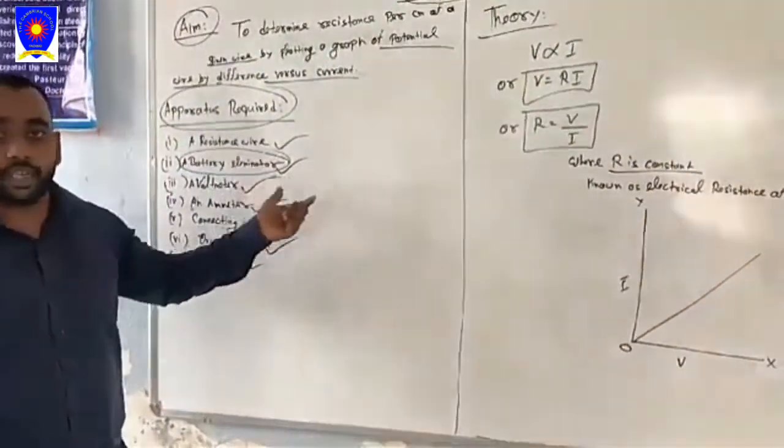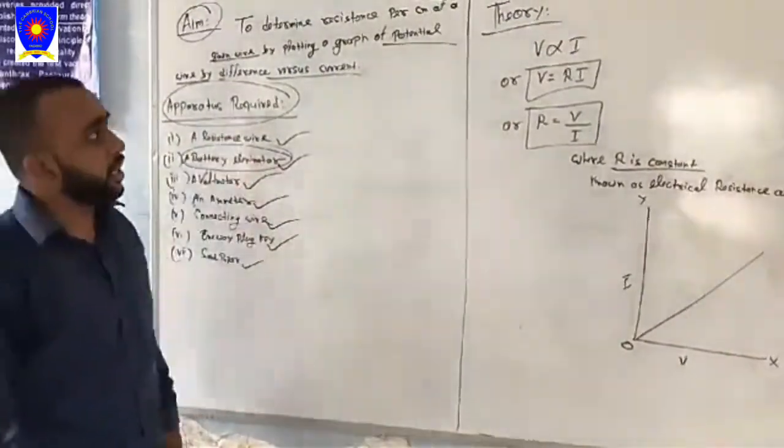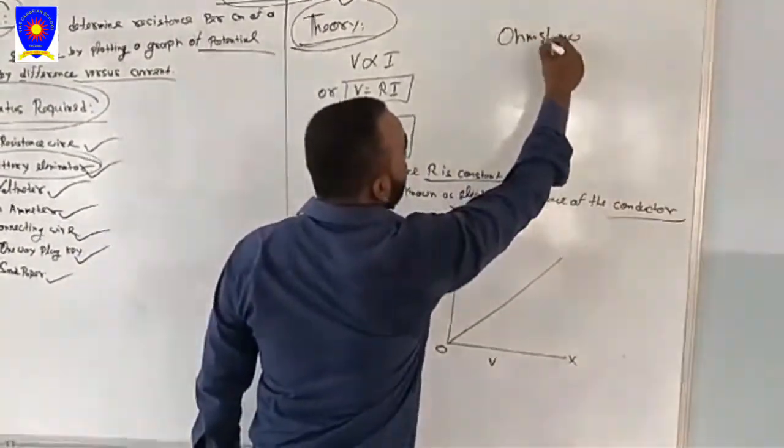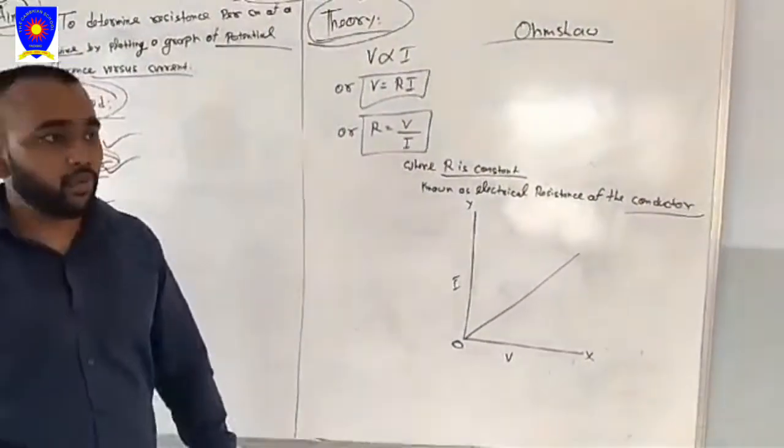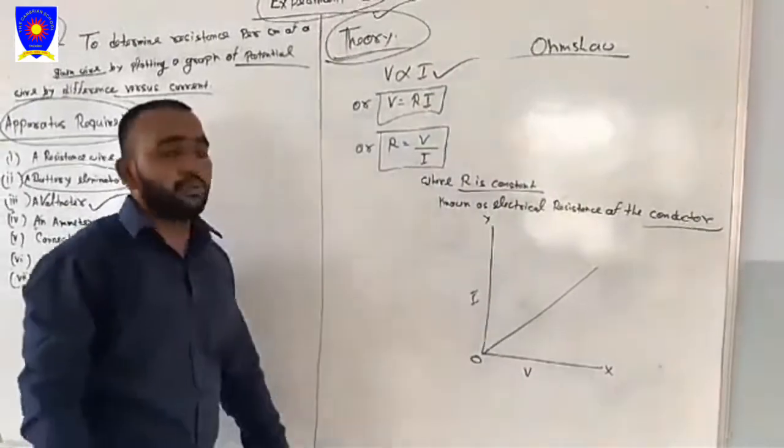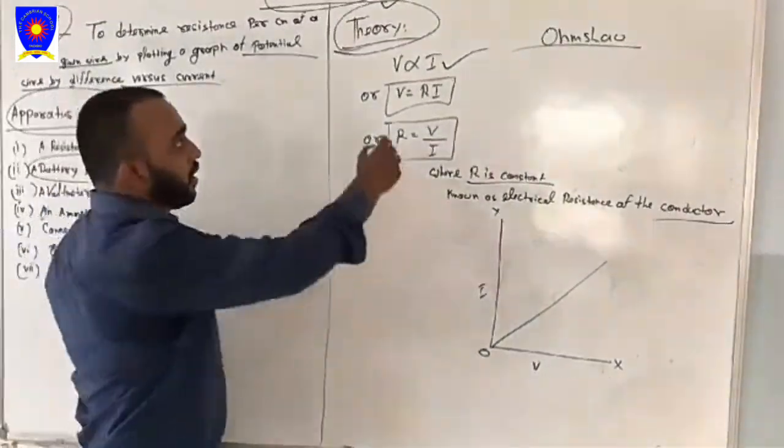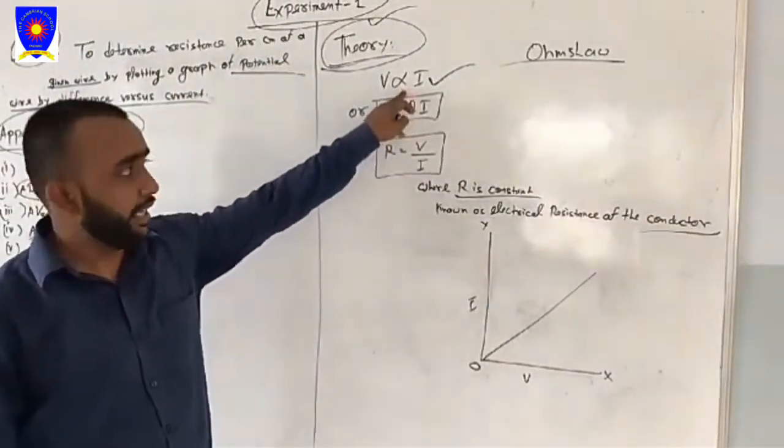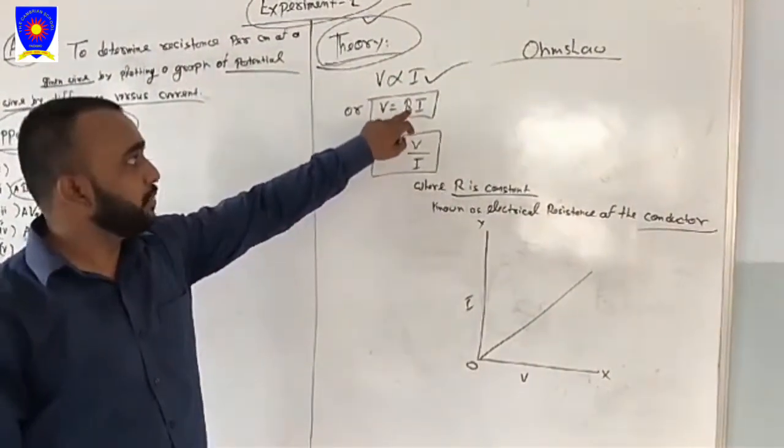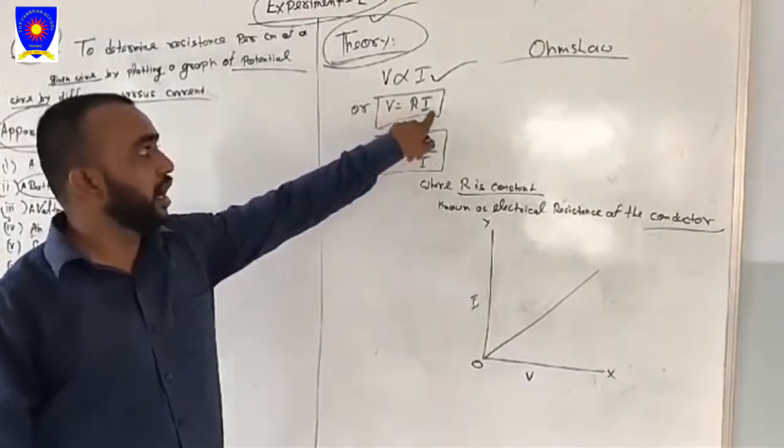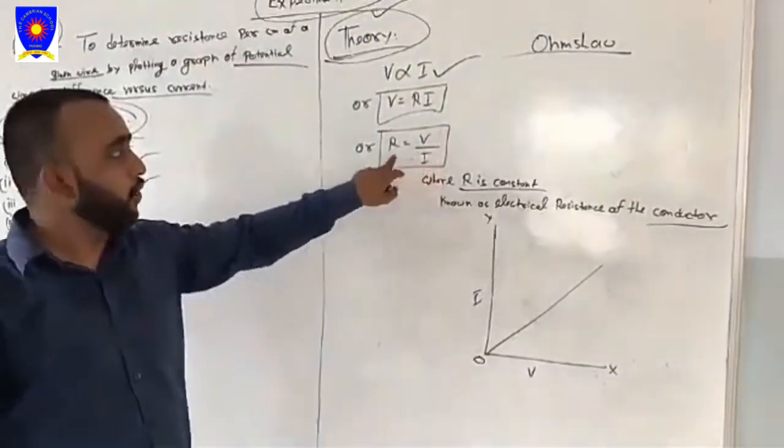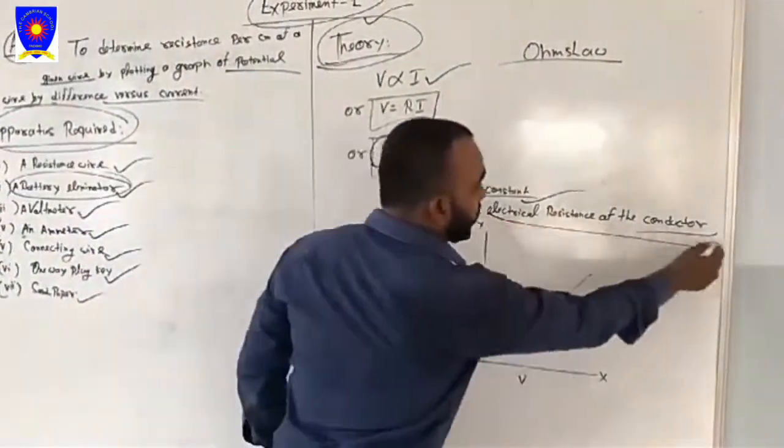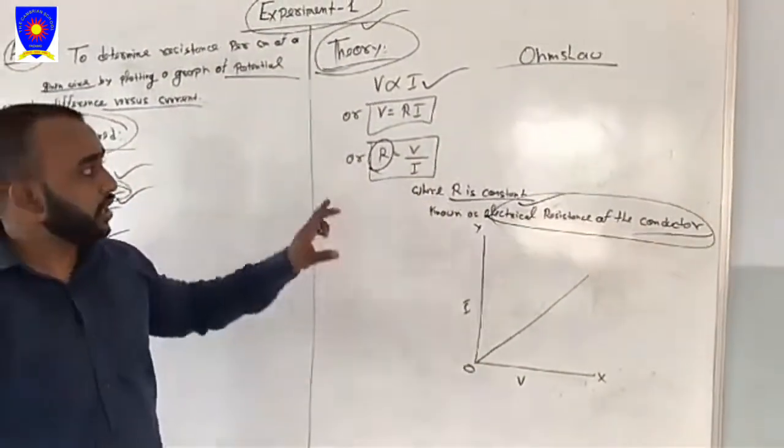The theory of this experiment - we know Ohm's law from class 10. What is the theory of Ohm's law? According to Ohm's law, voltage is always directly proportional to current in a given circuit. Potential difference is always directly proportional to the current. If we remove the directly proportional sign, there should be a constant.